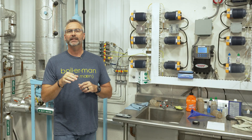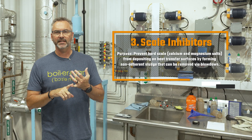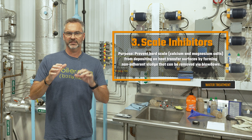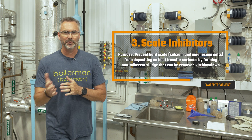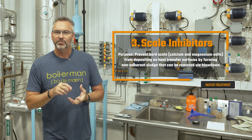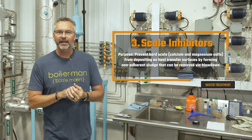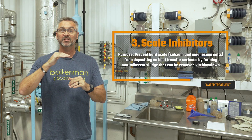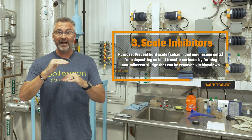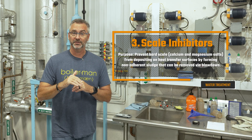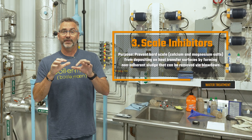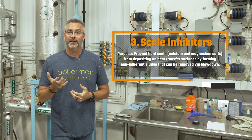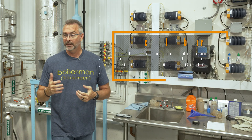Number three is scale inhibitors — phosphate treatment. The purpose is to prevent hard scale. Calcium and magnesium salts deposit on heat transfer surfaces, and phosphate treatment addresses this by forming non-adherent sludge that can be removed via blowdown.